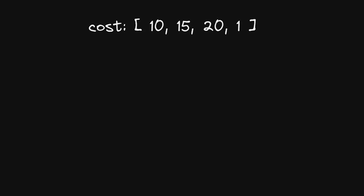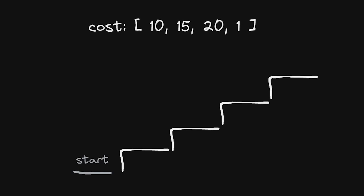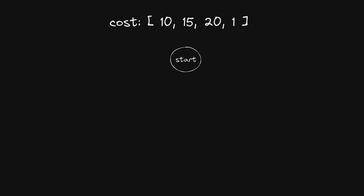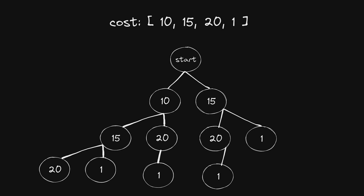This question is called Minimum Cost of Climbing Stairs. It asks you to find the minimum possible cost to reach the end of the staircase, where every step has a cost associated with it. The catch is that you can either do a big step and go up two stairs or a little step and go up one stair. The way I like to visualize this is using a binary tree, where each node has a choice of two options. To figure out the cheapest path, you explore every path and choose the one with the lowest cost.